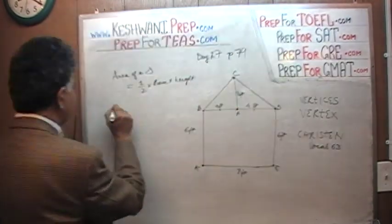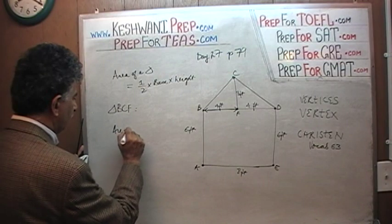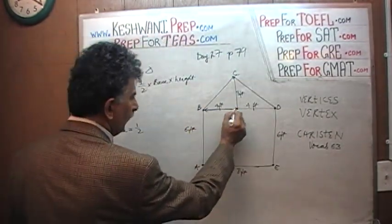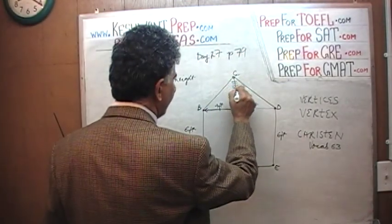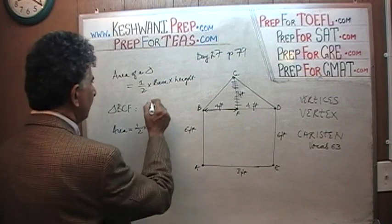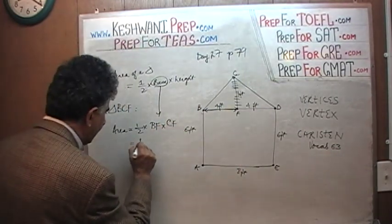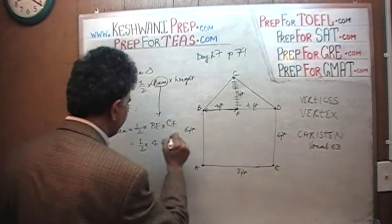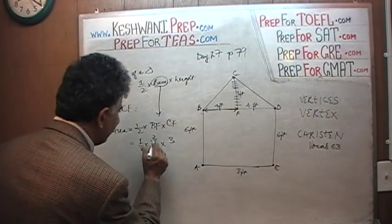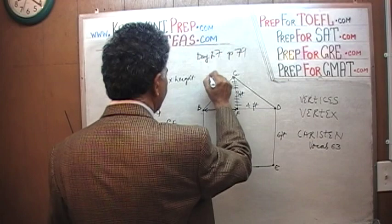Let's look at triangle BCF. In triangle BCF, the base is this part right here — that is your base — which is 4. So the area will equal one-half base, which is 4, times height. The height is CF, which is 3 feet. So the area equals one-half base BF times height CF — that is one-half times 4 times 3. You can cancel out the 2 with the 4, and we find that the area of this triangle is 6 square feet. So it's 6 square feet, which is the area of this triangle.